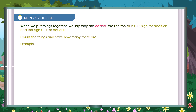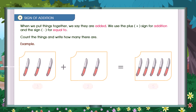We use the plus sign for addition and the equals sign for equal to. Count the things and write how many there are. Example: 3 plus 2 is equal to 5.